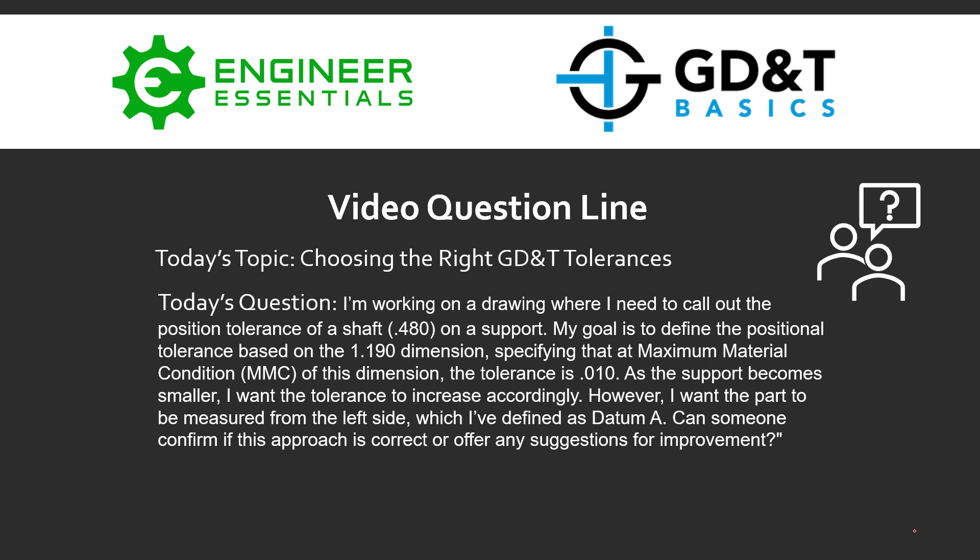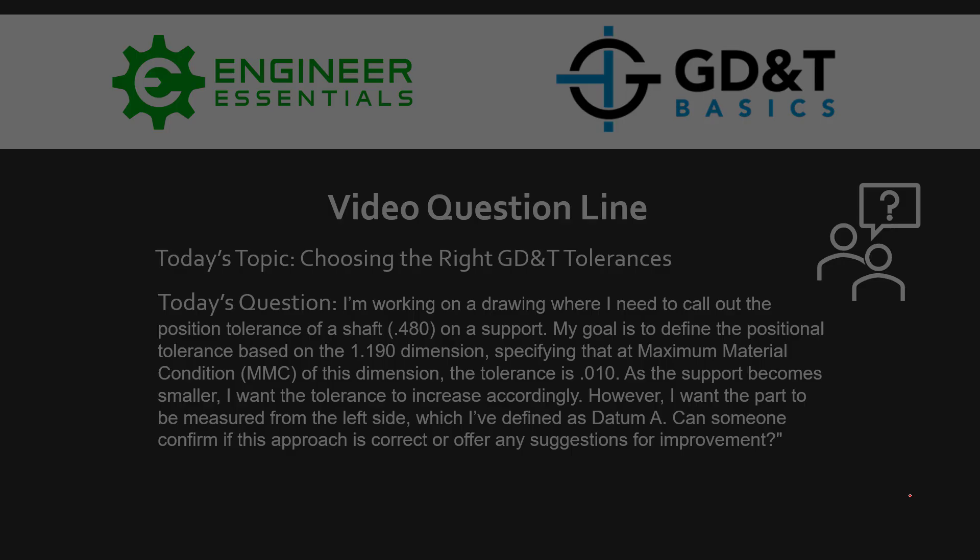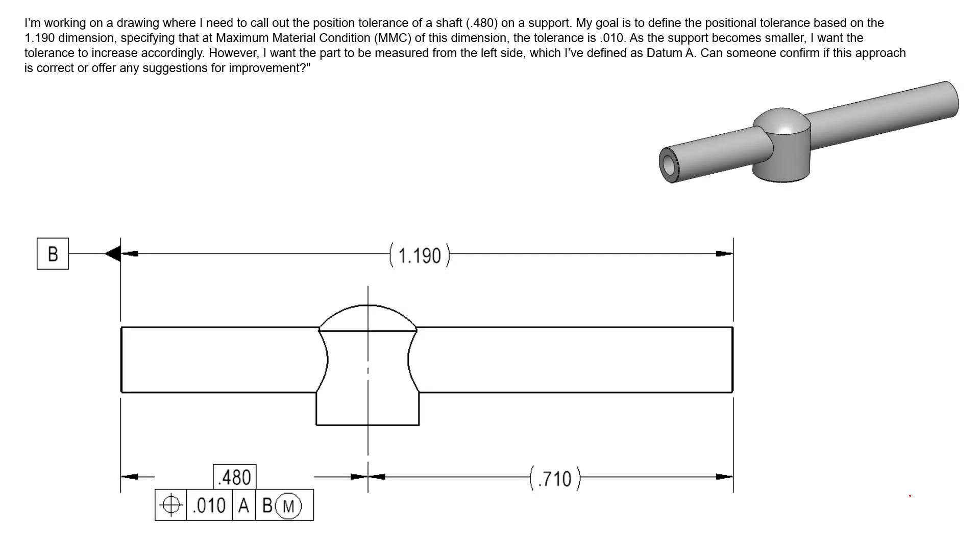Today's question is: I'm working on a drawing where I need to call out the position tolerance of a shaft on support. My goal is to define the positional tolerance based on the 1.190 dimension, specifying that at maximum material condition of this dimension the tolerance is 0.010. As the support becomes smaller, I want the tolerance to increase accordingly. However, I want the part to be measured from the left side, which I've defined as Datum A. Can someone confirm if this approach is correct or offer any suggestions for improvement?